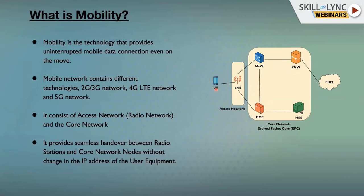Now consider the UE is traveling from Bangalore to Mysore. An eNodeB has a range of only a few kilometers. When the UE moves out of radio coverage, it performs a handover from one eNodeB to a different eNodeB. In this process, the UE continues to use the same IP address. That is why you will not see any interruption in data communication — and that is why this technology is called mobility.